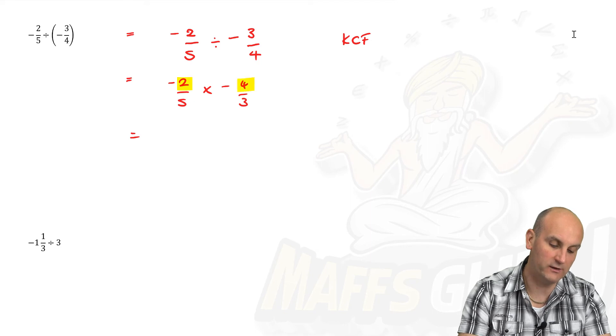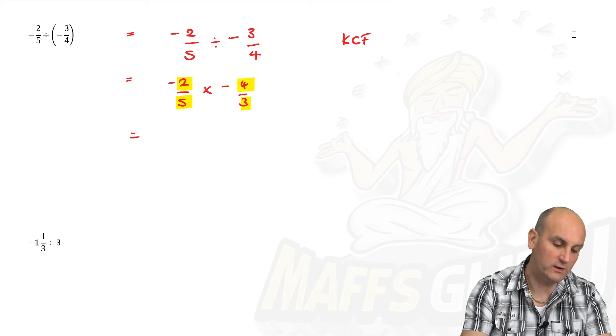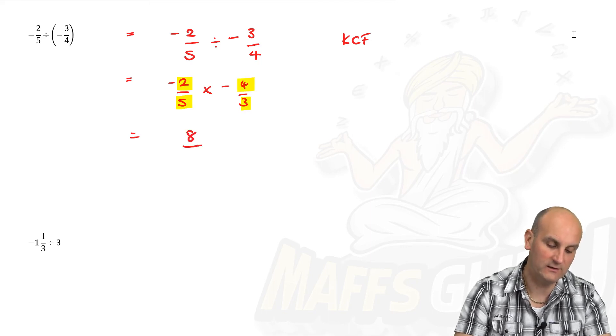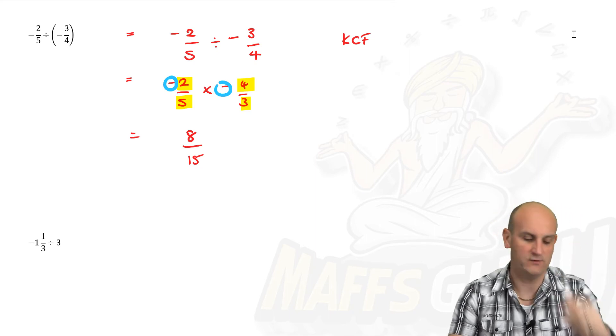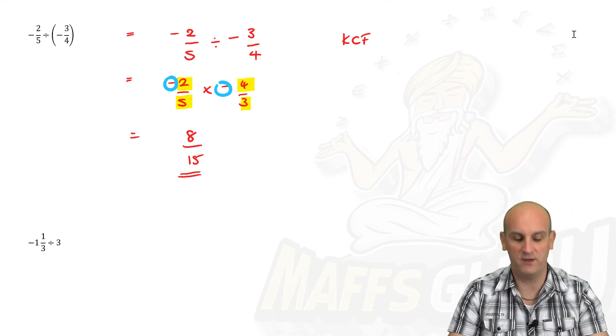So I'm going to do two times four, which is eight, five times three, which is 15. And now I'm going to look at my two signs. A negative and a negative becomes a positive. And there we go, ladies and gentlemen, my final answer.